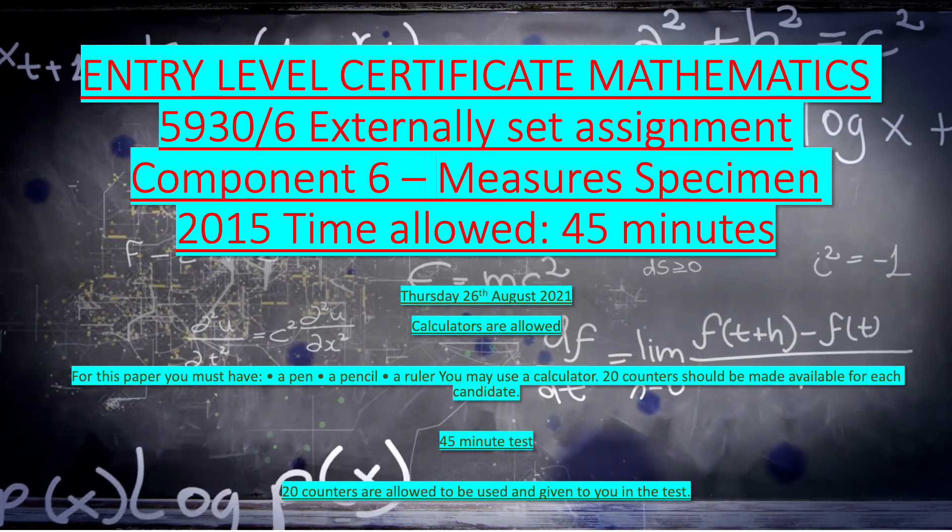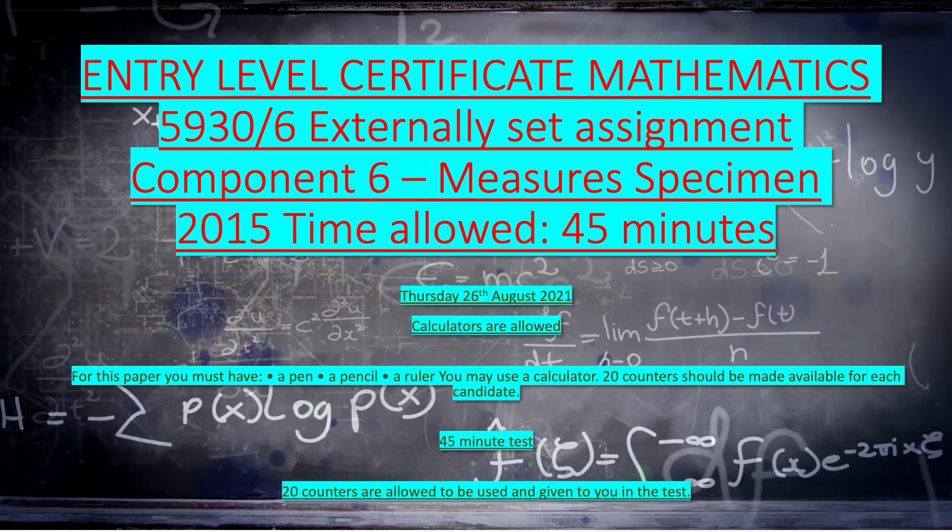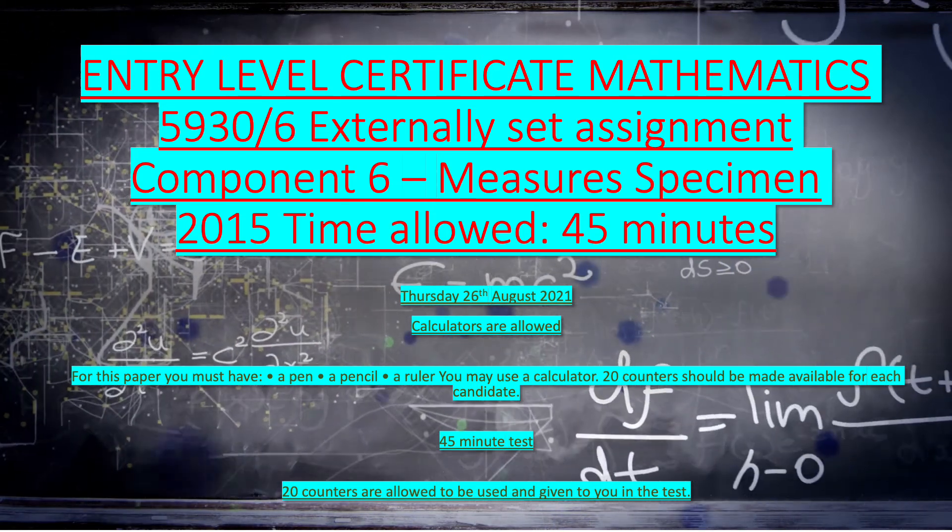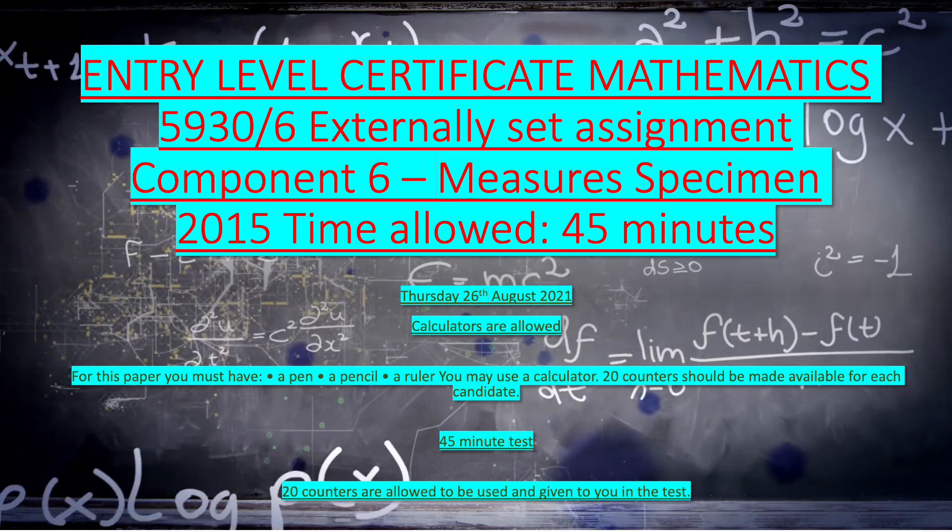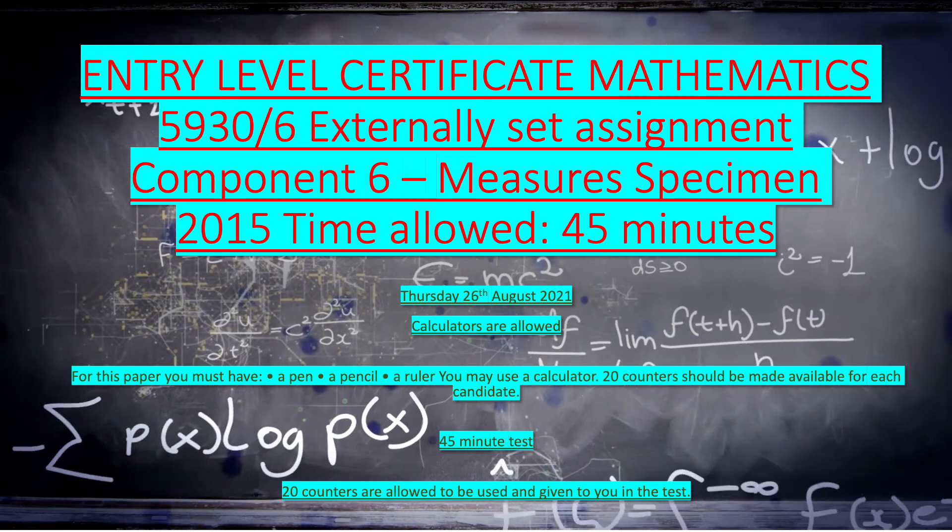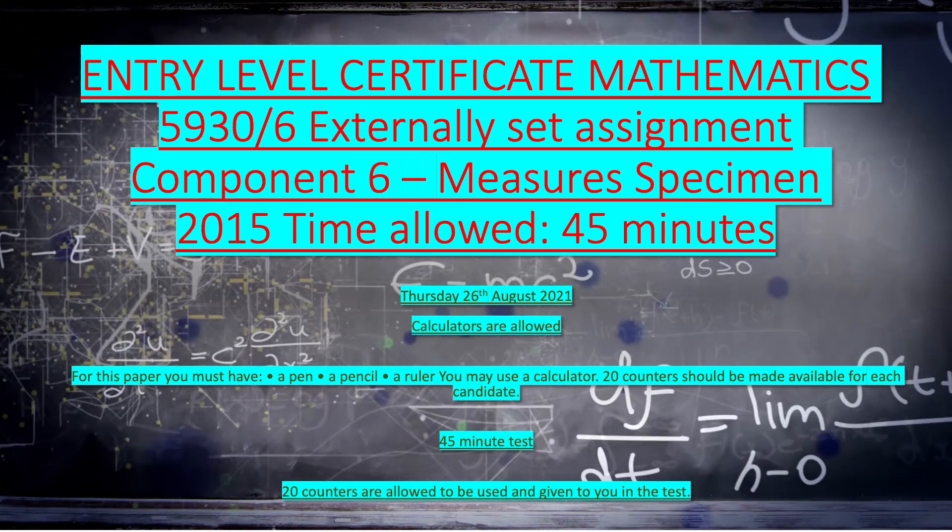Good morning guys and welcome to today's video where I'm looking at the Entry Level Certificate Mathematics 5930/6 externally set assignment Component 6 Measures. It is a specimen paper from 2015 and the time allowed is 45 minutes.